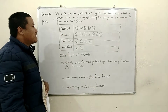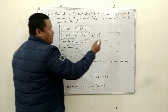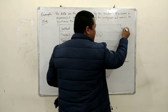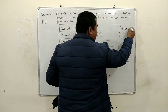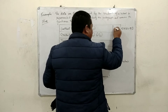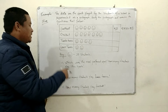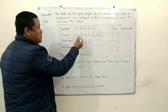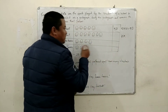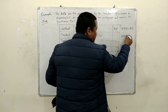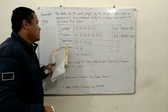That means one picture is equal to 10 students. So let us count how many students played football. There are 5 pictures, and one picture equals 10 students, so 5 × 10 = 50. That means 50 students played football. Now cricket — 1, 2, 3, 4, 5, 6, 7 pictures — 7 × 10 = 70. That means 70 students played cricket.